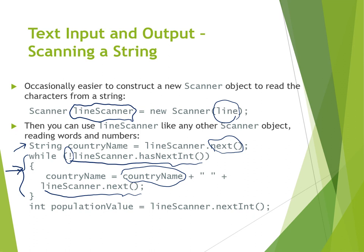When concatenating parts of the country name, we need to add a space between them. In the case of "United States" we have only one iteration because after that we reach the population. In that single iteration we concatenate "United" with "States", so the country name becomes complete. After that, when we see the population, we say `int populationValue = lineScanner.nextInt()`. The `nextInt()` method parses the string and returns the integer representing the population value.